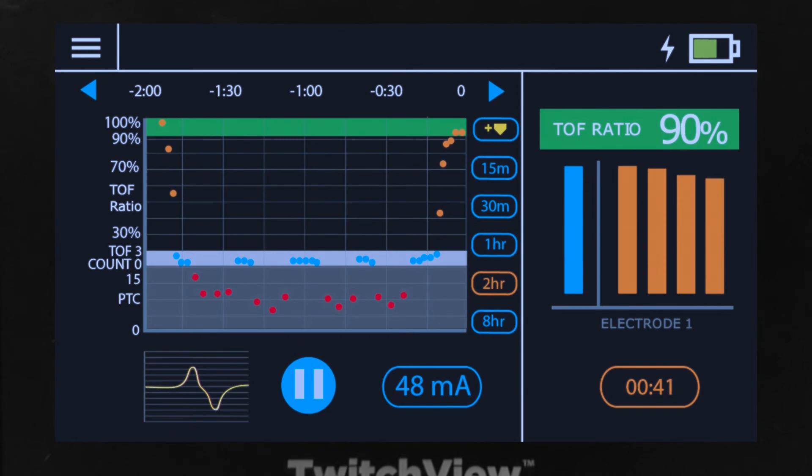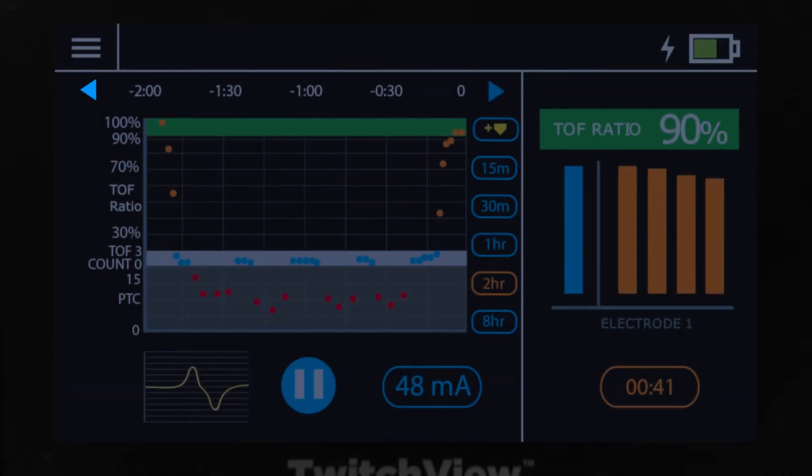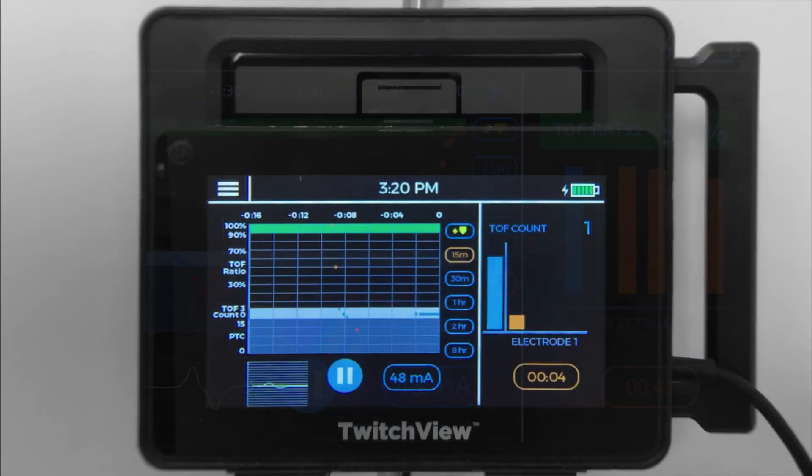The trend plot can be scaled to display short windows of time down to 15 minutes and longer windows of time up to 8 hours. During longer cases, you can scroll back to view earlier periods of time.